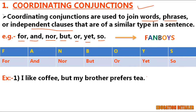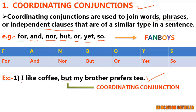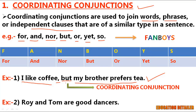In the first example: 'I like coffee, but my brother prefers tea.' Here, the coordinating conjunction 'but' joins two independent clauses: 'I like coffee' and 'my brother prefers tea.' When a coordinating conjunction joins two independent clauses, place a comma before the conjunction. In the second example: 'Roy and Tom are good dancers.' The coordinating conjunction is 'and' and it connects two noun words, Roy and Tom. There is no comma here because when a coordinating conjunction joins two words or phrases, do not use a comma.